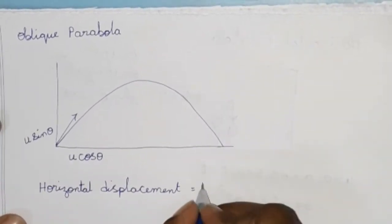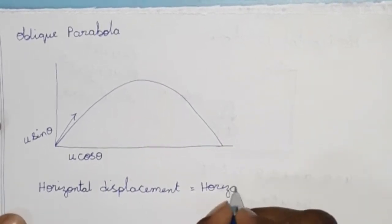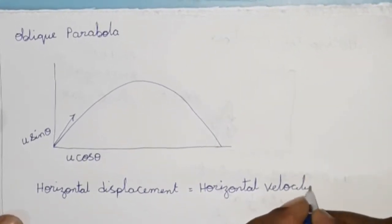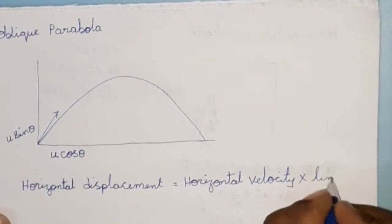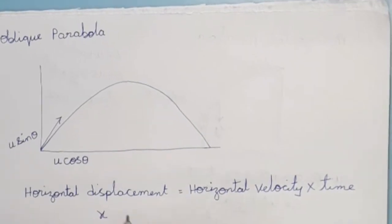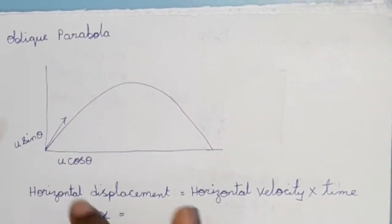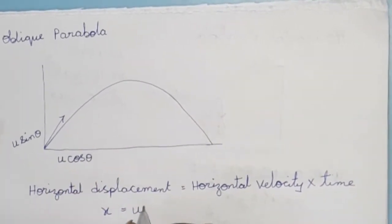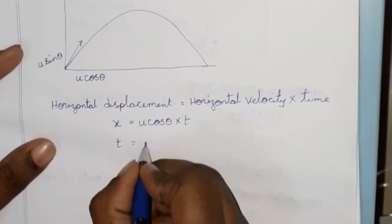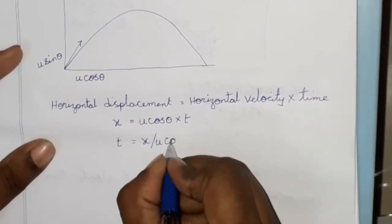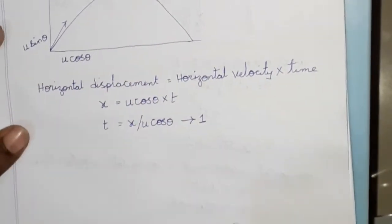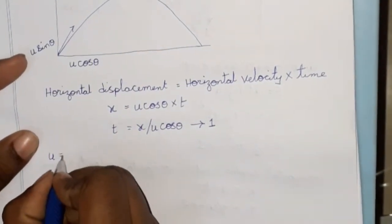Horizontal displacement is equal to horizontal velocity into time. In oblique projection, horizontal displacement x equals u·cosθ into t. So t is equal to x divided by u·cosθ. This is the first equation.